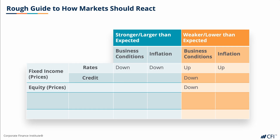Inflationary pressures also place pressure on fixed income credit and equity prices, as the present value of future cash flows is expected to diminish. Both fixed income credit and equities tend to outperform when business conditions are better than forecasted, as earnings and repayment prospects improve. For foreign exchange, let's assume that we're talking about the domestic currency versus an imaginary basket of all other currencies.